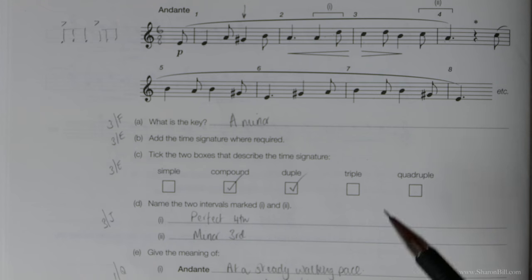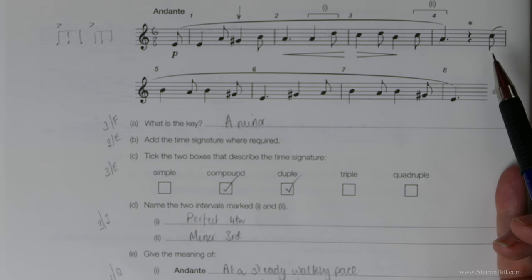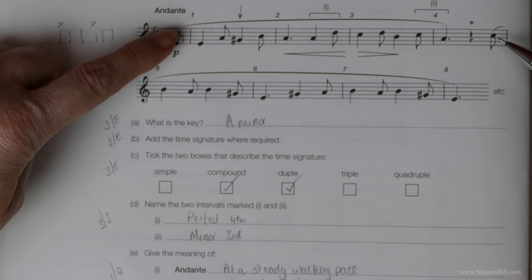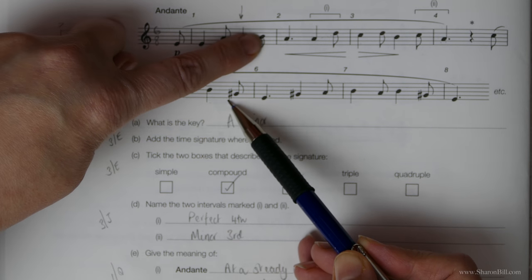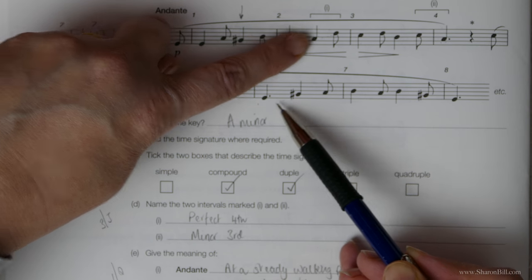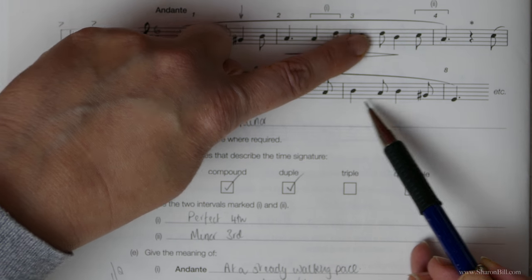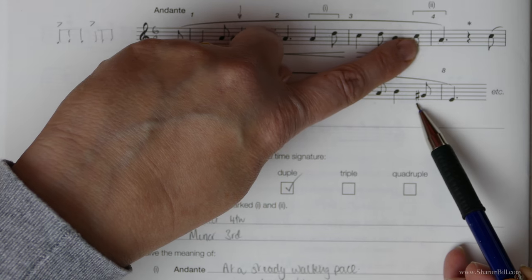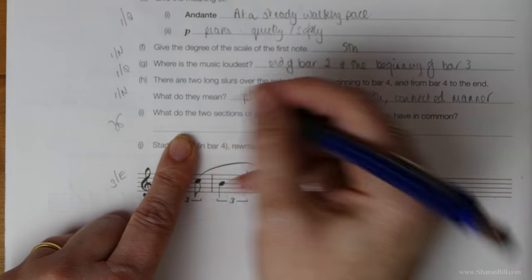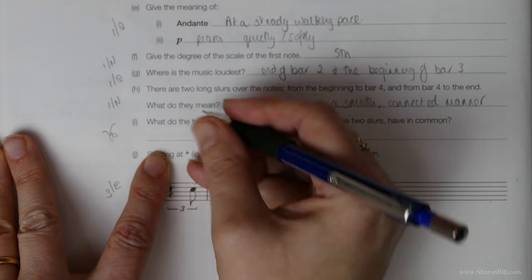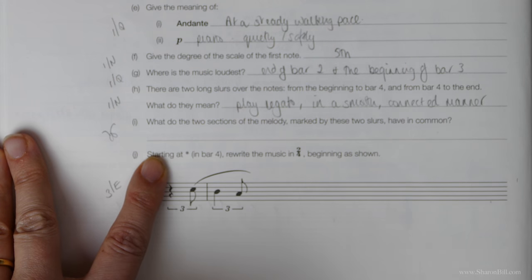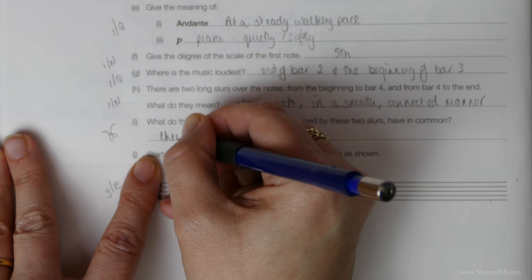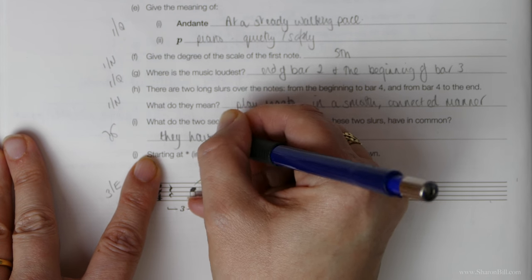What do the two sections of the melody marked by these two slurs have in common? Just at a quick glance, I'm saying that the rhythms are the same. Let's see. Quaver, crotchet, quaver, crotchet, quaver, dotted crotchet, crotchet, quaver, crotchet, quaver, crotchet, quaver, dotted crotchet, yeah. Sometimes you can kind of guess what's coming before you've even looked. So they have the same rhythm will suffice.